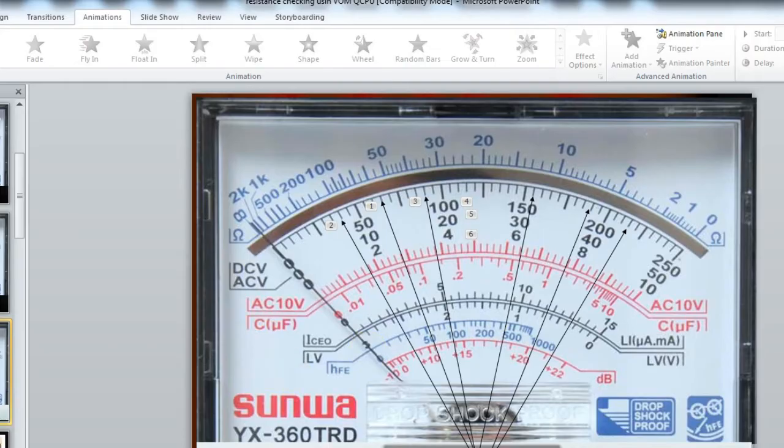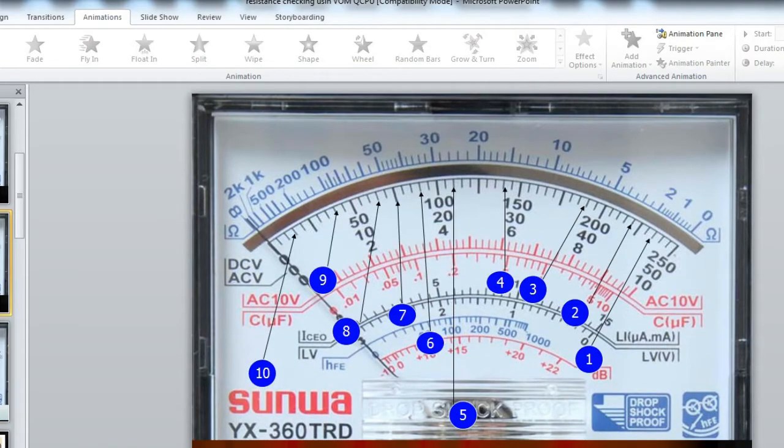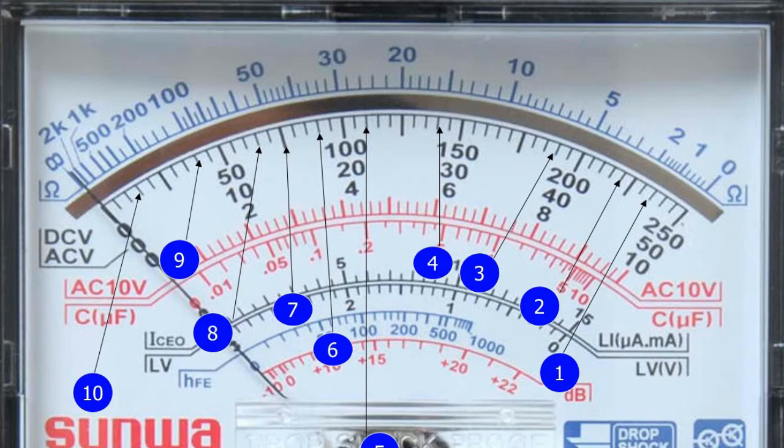Ngayon, titignan natin, magbibigay ako ng mga example ngayon. So, nakaset na yan ng mga tinatawag nating settings. Ngayon, kung meron tayong DCV 0.1, yung number 1, ibig sabihin yan, magbabasa tayo sa 10 volts. Nasa 10 volts. Itong pinakamalapit ngayon is 8. Sa 10 volts, ang basa natin ng bawat small line is 0.2. So, meron tayong 8.2, 8.4, 8.6, 8.8. So, we have 9, 9.2. Ibig sabihin yan, 9.4 yung number 1.